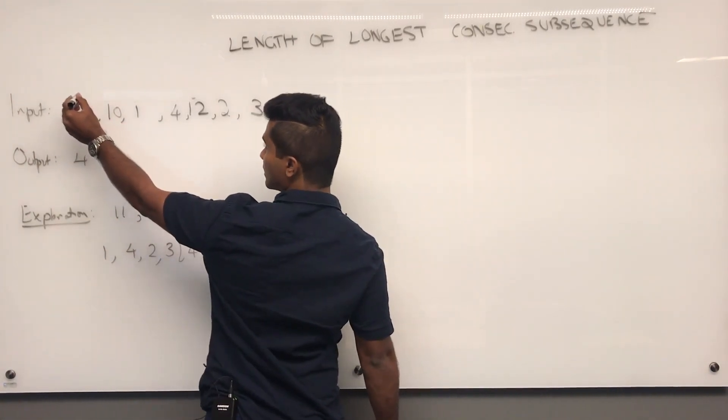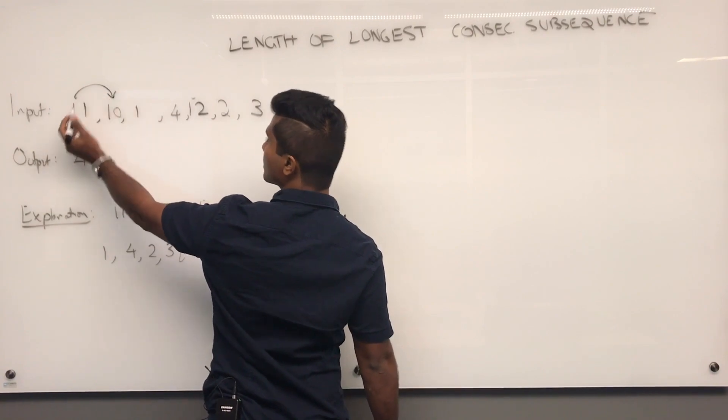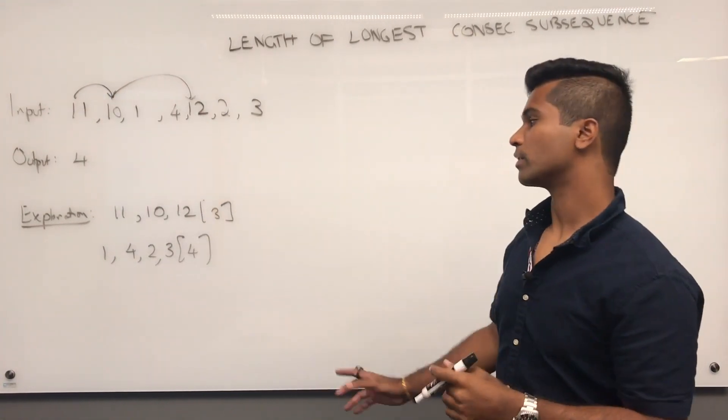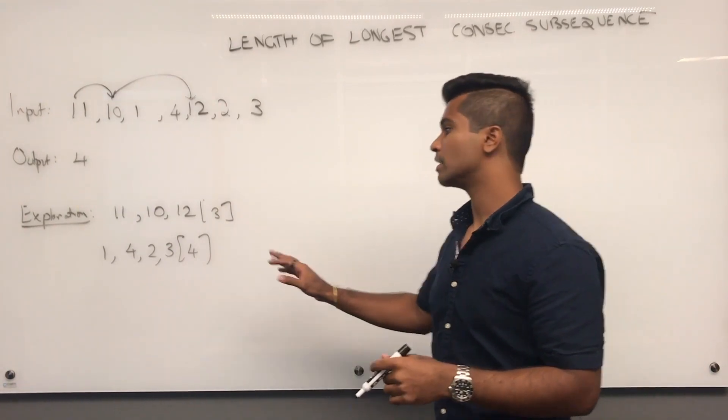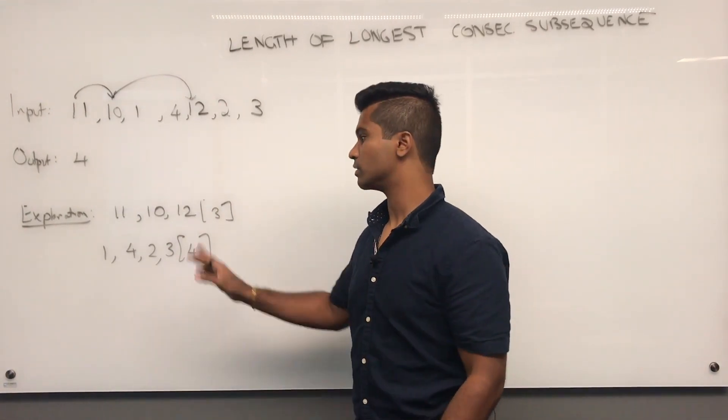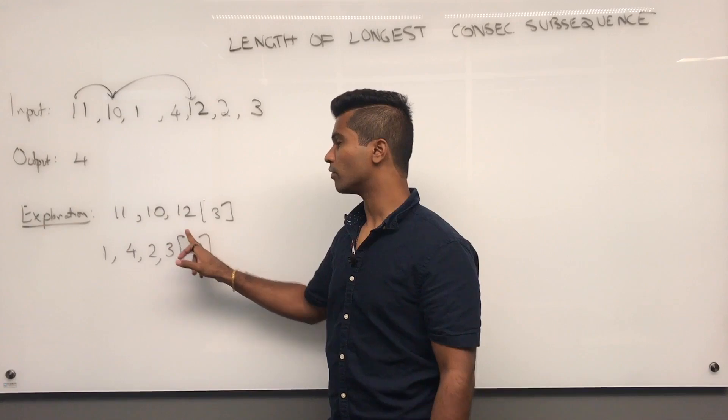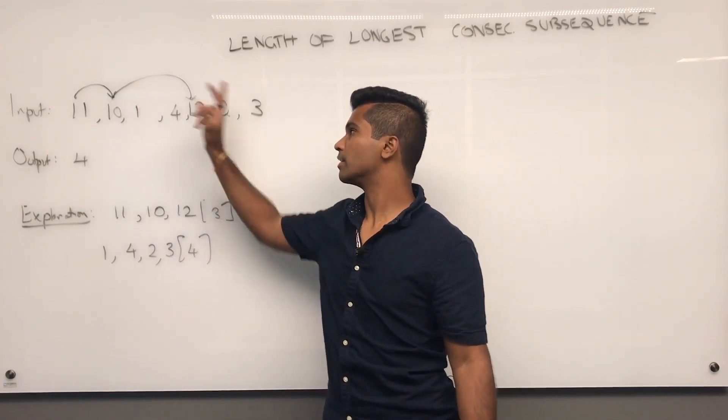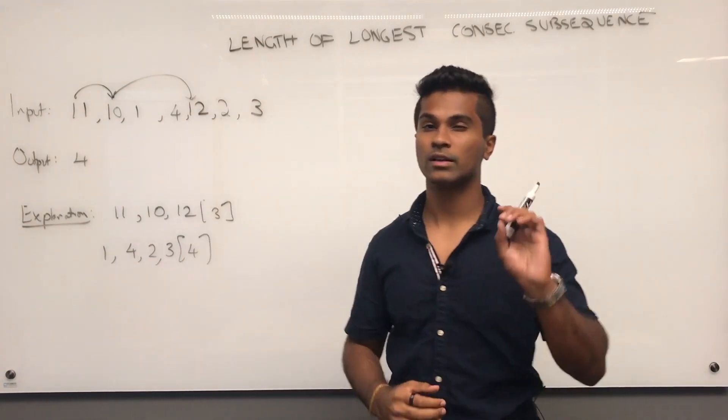10, 11, this one, this is a subsequence, 11, 10, 12 is a subsequence, however, the subsequence itself contains increasing consecutive integers. So, 10, 11, and 12. But the actual subsequence of the array is 11, 10, 12. That's the little caveat.